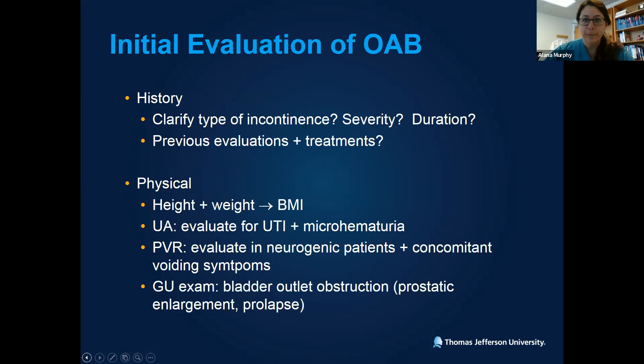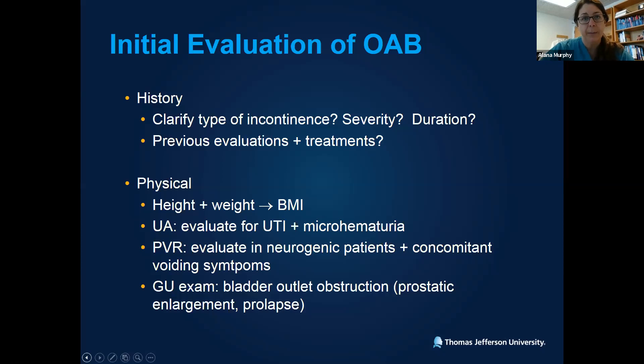With any new patient, we start with a history and physical. Key components of the history include clarifying the type of incontinence and lower urinary tract dysfunction, going over the severity and duration — has this been going on for two days, perhaps due to a UTI, or for years? It's also important to elucidate previous evaluations and treatments. If they've already gone through the first steps of the treatment algorithm, you know where to jump in. Sometimes patients come in having had more advanced therapies and skipped the basic steps, and we have to start from the beginning.